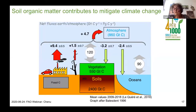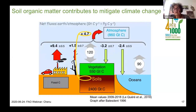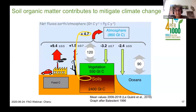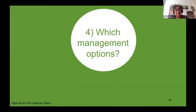Soil organic matter also contributes to mitigating climate change. There are huge carbon stores in the soil — more than two times as much carbon in soils as in the atmosphere. A very small variation of these carbon stores, even in the upper 40 centimeters of soils, could strongly impact the composition of the atmosphere. This is the basis of the four per mill initiative — soils for food security and climate — which promotes preservation and increase of soil carbon in agricultural soils.